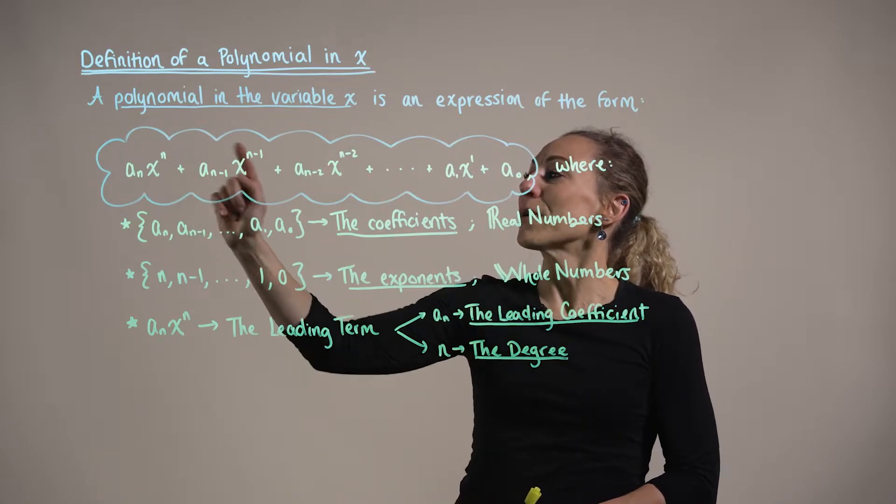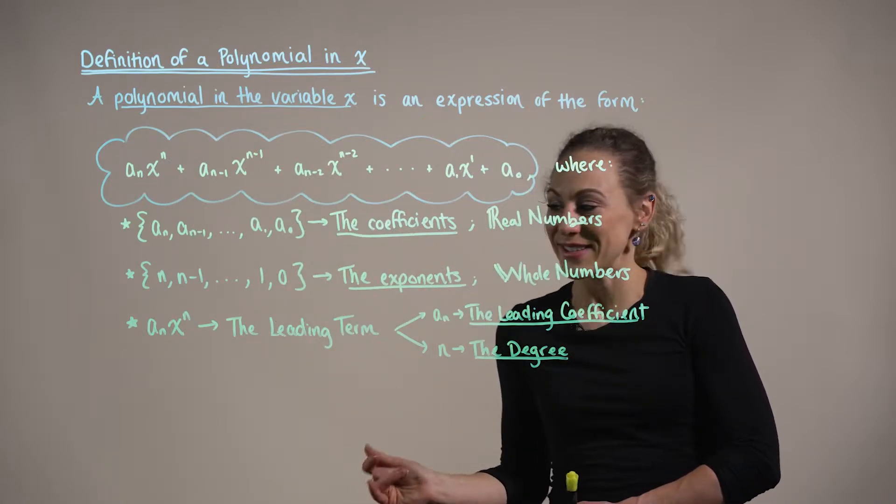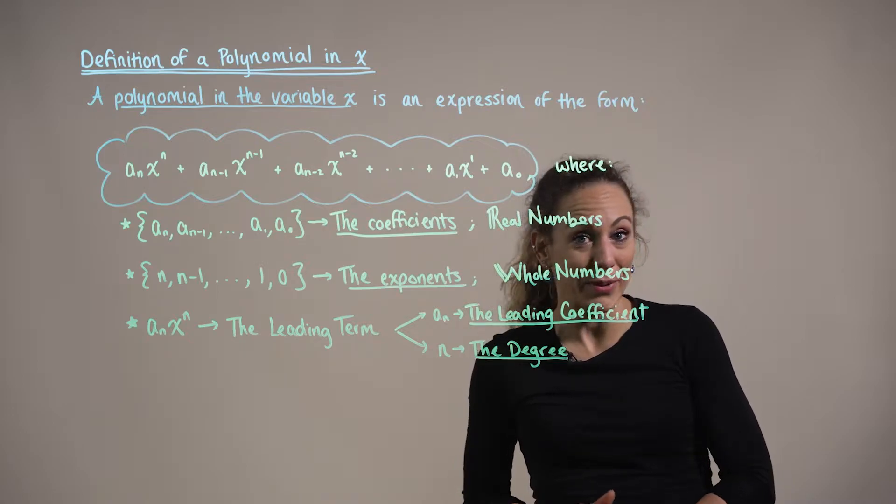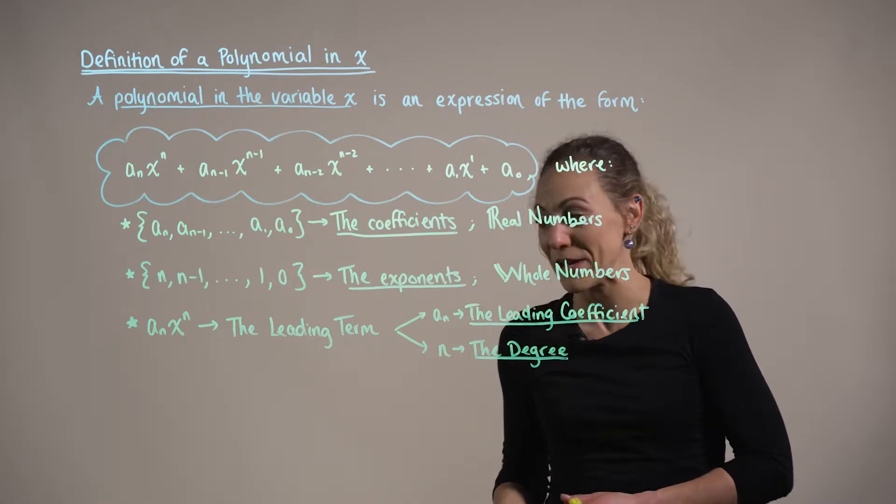Now these powers on x are the exponents, and the exponents are going to be restricted to whole numbers: zero, one, two, three, and beyond.